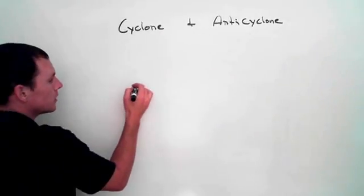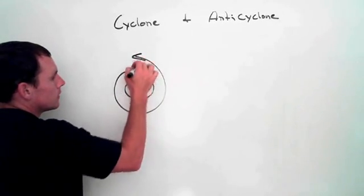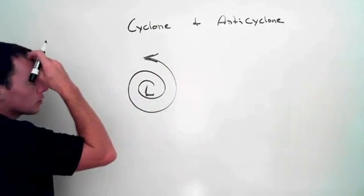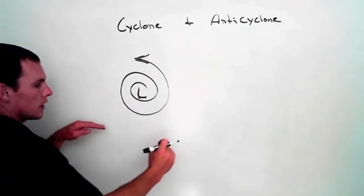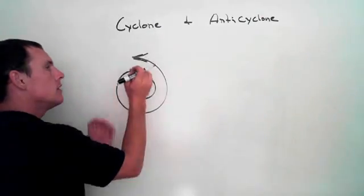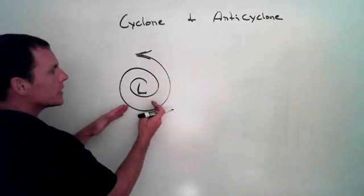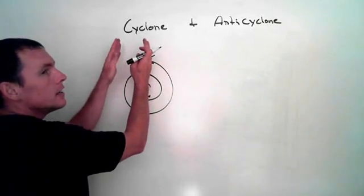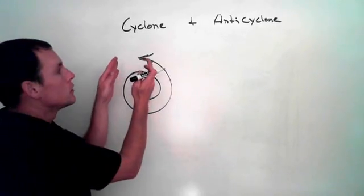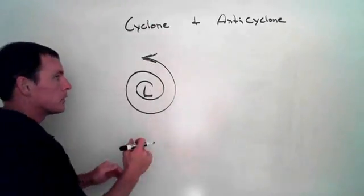Cyclone, low pressure. Counterclockwise rotation. Warm, moist air rising and creating clouds because warm, moist air that rises loses, as it cools, it loses its capacity to hold moisture. Therefore, it rises, cools, precipitates.